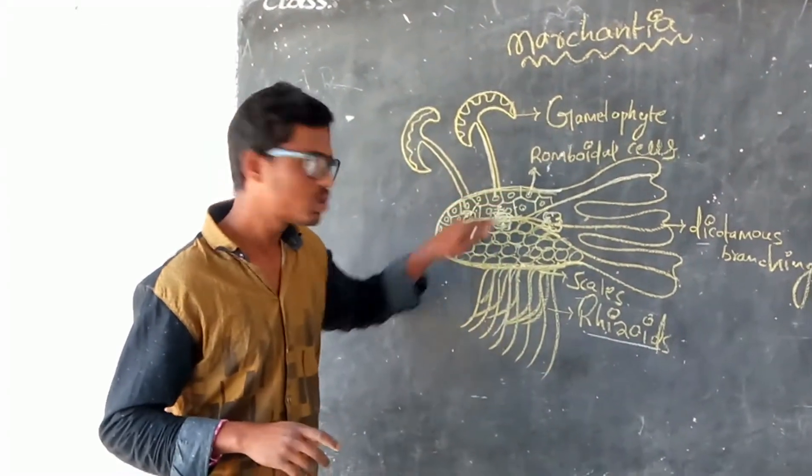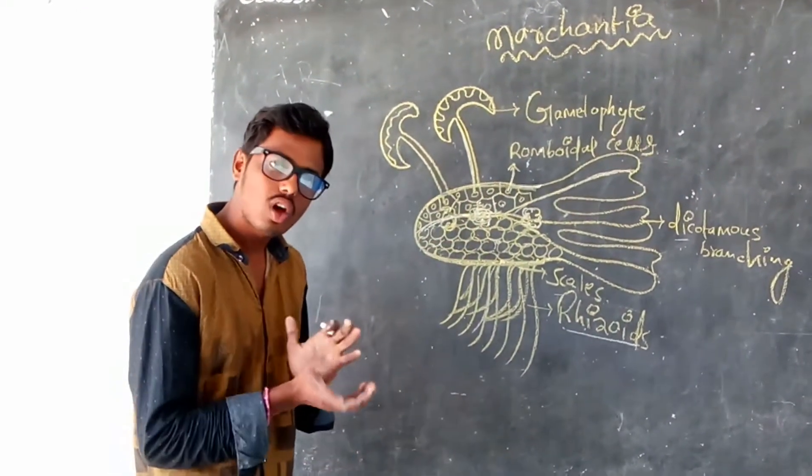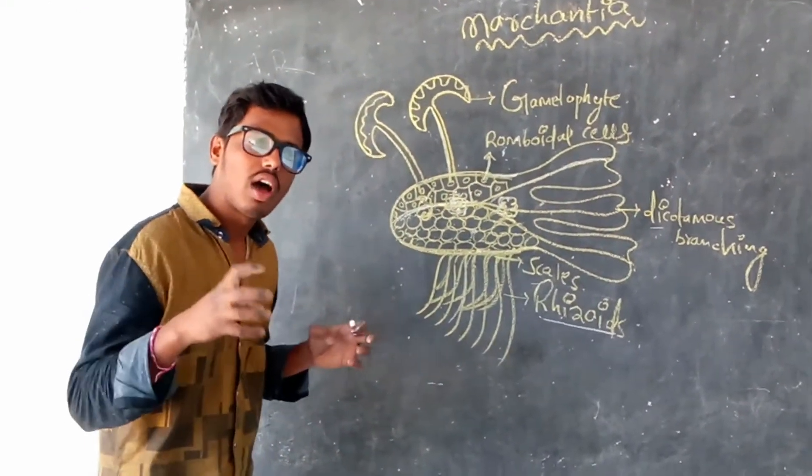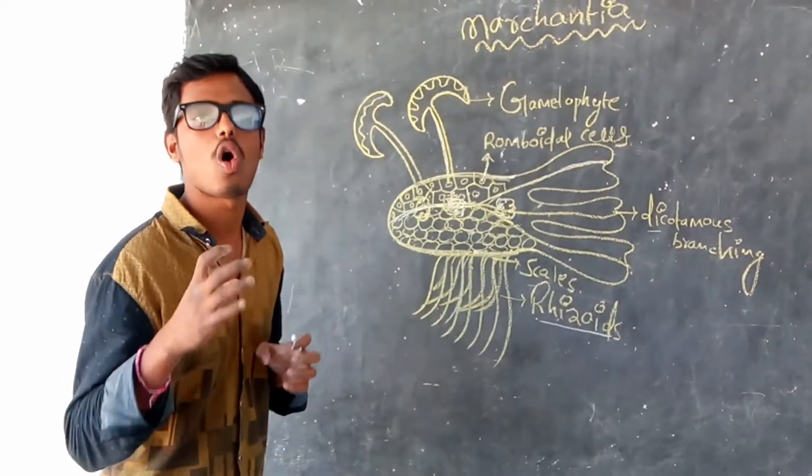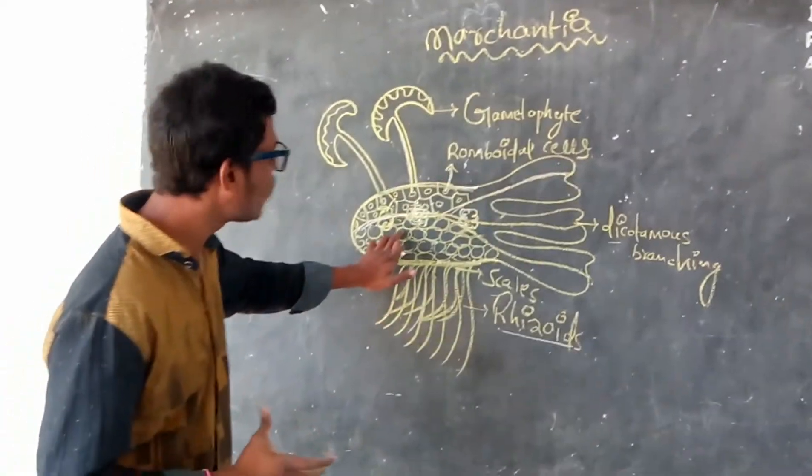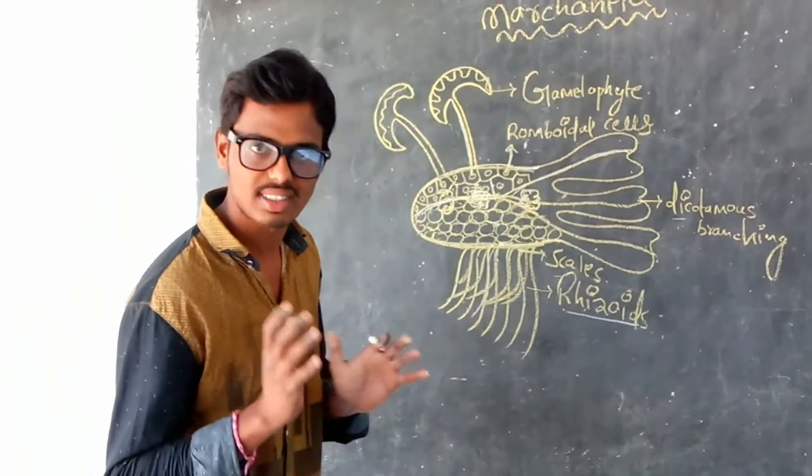That is the dorsal part. Ventrally, the cells are arranged and intercellular spaces are present. These cells are called parenchymatous cells.